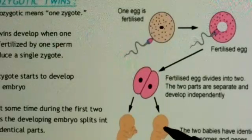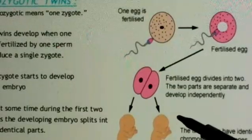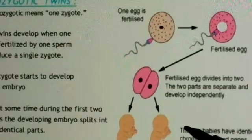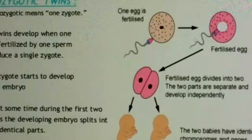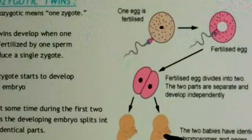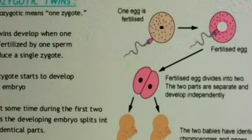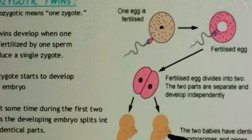There is also a possible drawback in monozygotic twins: the two twins can be conjoined. Conjoined means there is a possibility that one organ will be common in both twins.